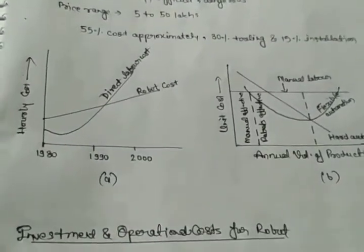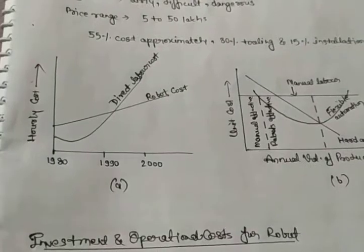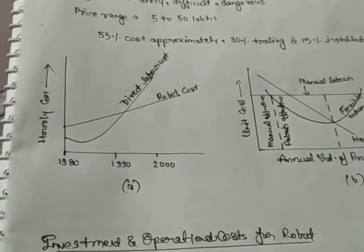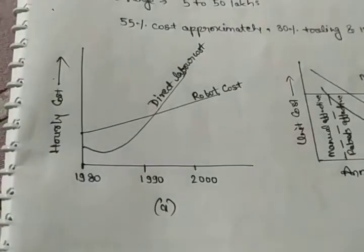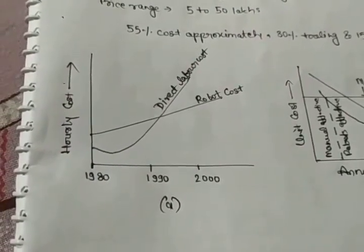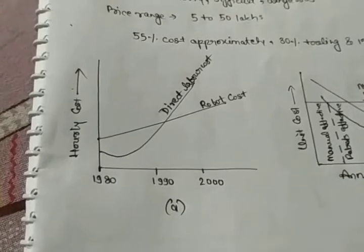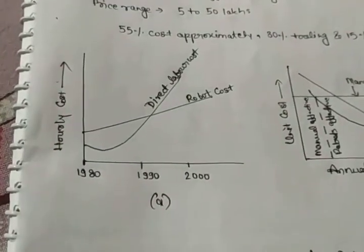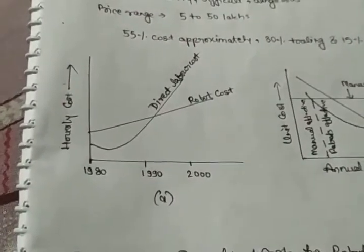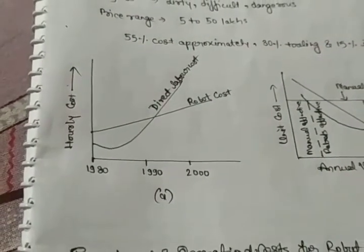Now different types of graphs plot in robot. First one graph represent various production methods and their cost effectiveness. In order to economically analyze, it is important to consider all the cost involved. Whereas diagram represent yearly holiday cost of robot and direct labor cost comparison.